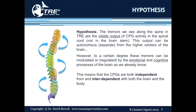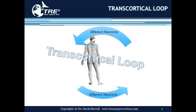This means that the central pattern generators are both independent from and interdependent with both the brain and the body. The way that we can tie this into previous slides in your training is by way of the transcortical loop.